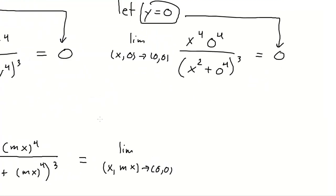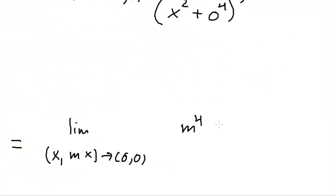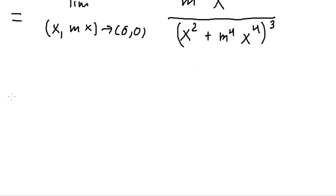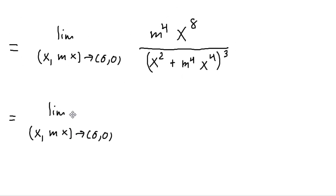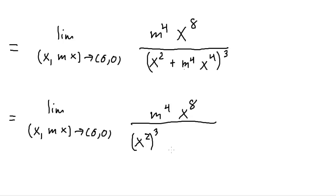So let's take the next algebraic step in simplifying. We're going to get m to the fourth x to the eighth. All of this is going to be divided by x squared plus m to the fourth x to the fourth. And all of this is going to be cubed. So, again, we can do a little bit of algebra to simplify things.